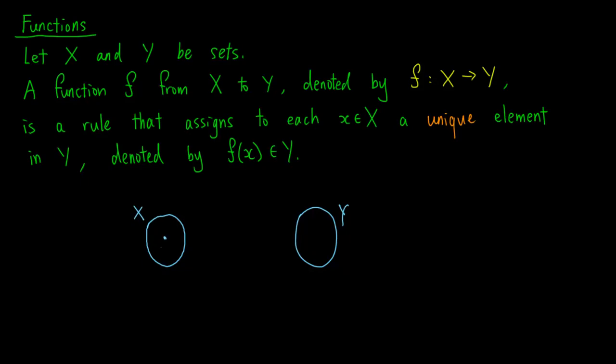Let's talk about functions. Let x and y be sets. A function f from x to y, denoted by f colon x arrow y, is a rule that assigns to each element x in the set x